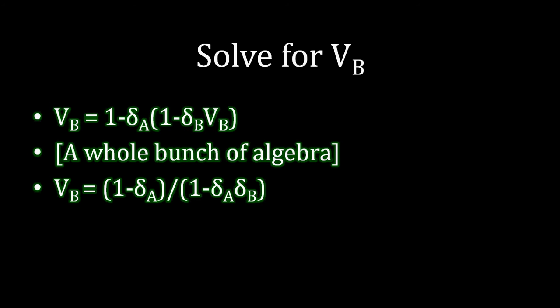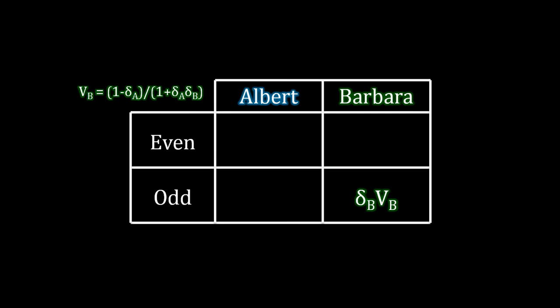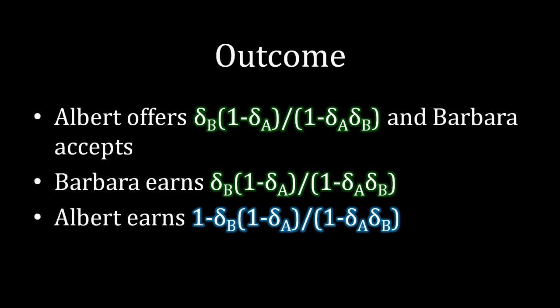Now we can take that information and feed it back into the game to figure out exactly what the offer is and what the players' welfare will be. We know Barbara receives delta B times VB in any odd period, including the first period, and Barbara accepts that amount. Plugging VB in, Albert offers delta B times one minus delta A, divided by one minus delta A delta B, and Barbara accepts. That happens in the very first period. Barbara earns that offer amount, and Albert receives the remainder: one minus that offer amount.